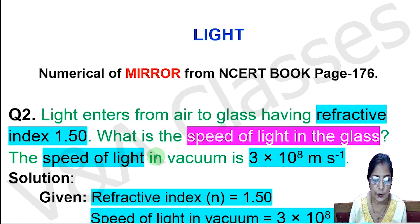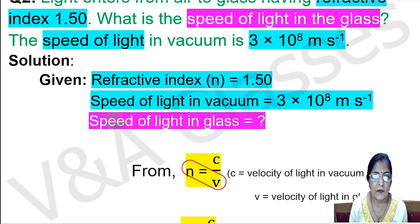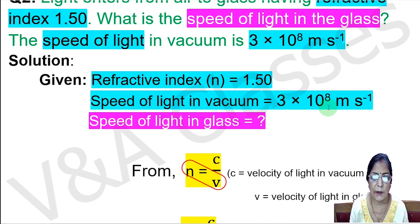The speed of light in vacuum is 3 multiplied by 10 to the power 8 meters per second. Given: refractive index n equals 1.50, and speed of light in vacuum c equals 3 multiplied by 10 to the power 8 meters per second. We need to find the speed of light in glass.